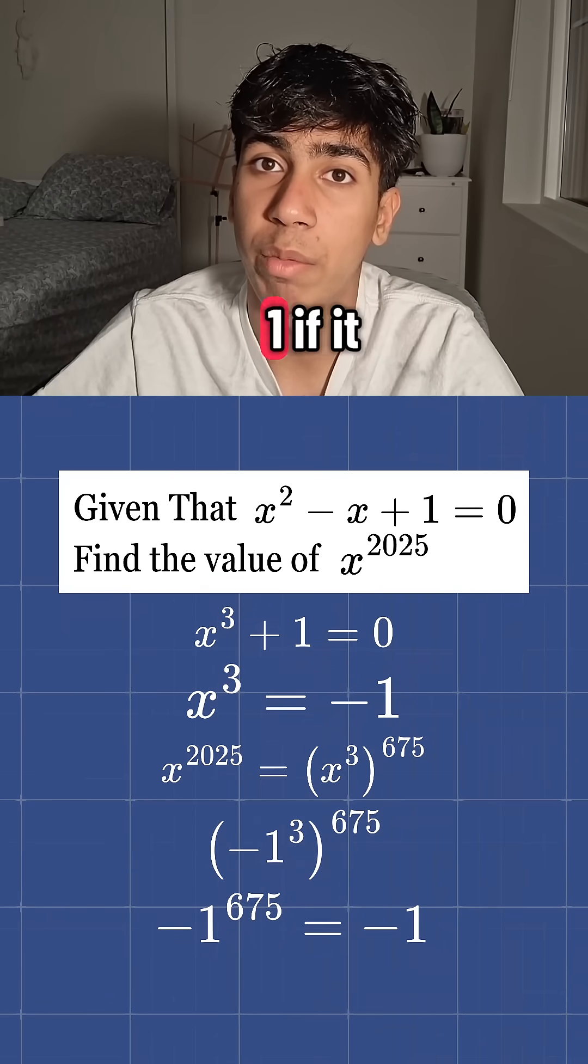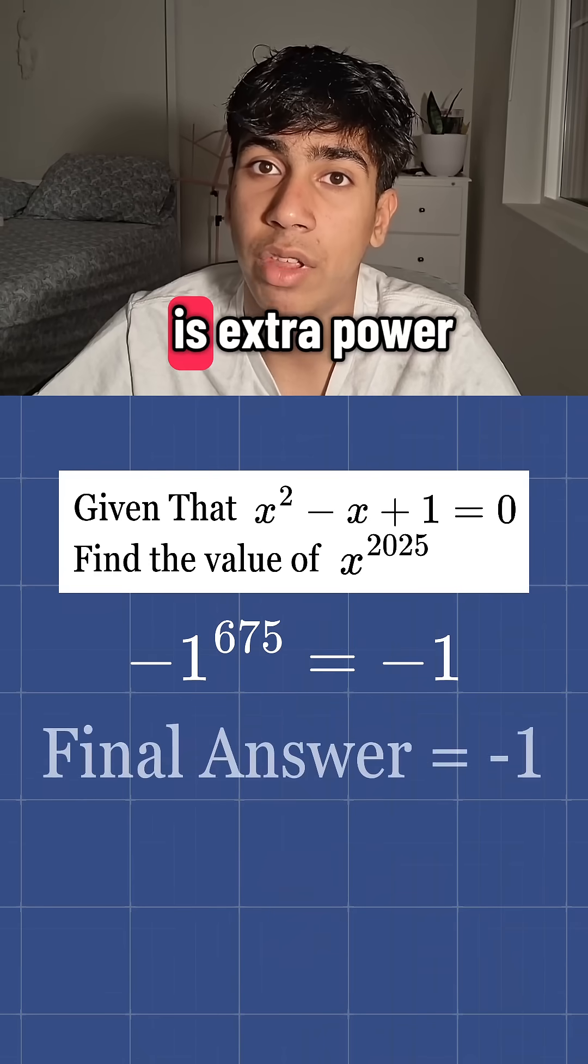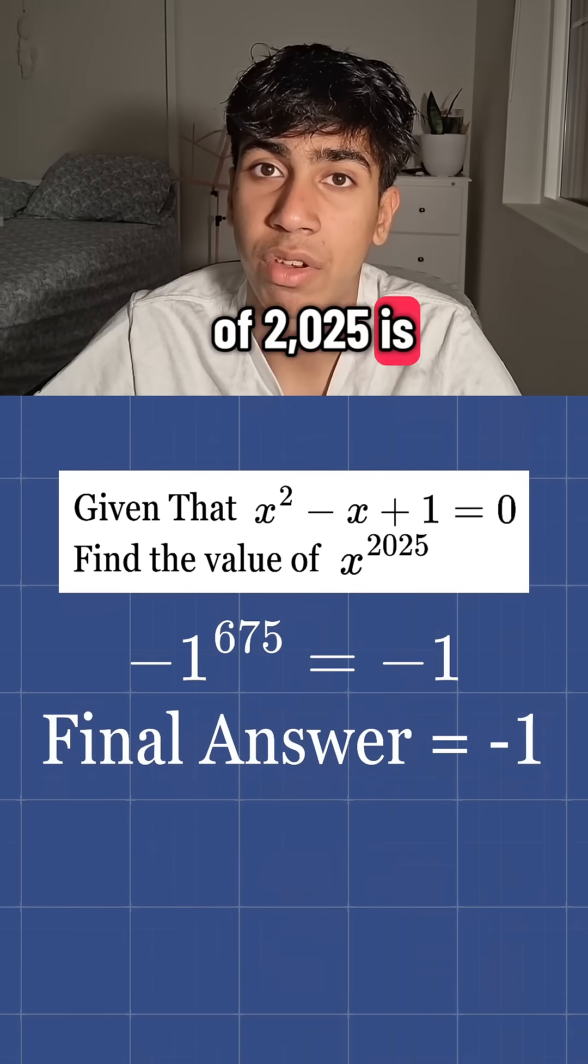The result would have been positive 1 if it was an even exponent. So the answer is x to the power of 2025 is equal to negative 1.